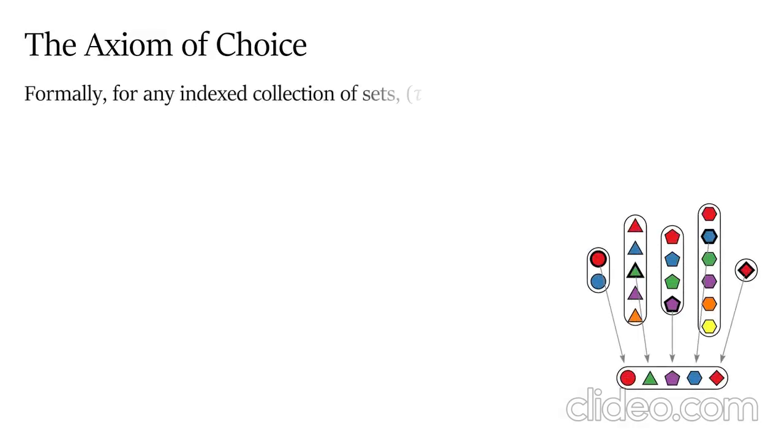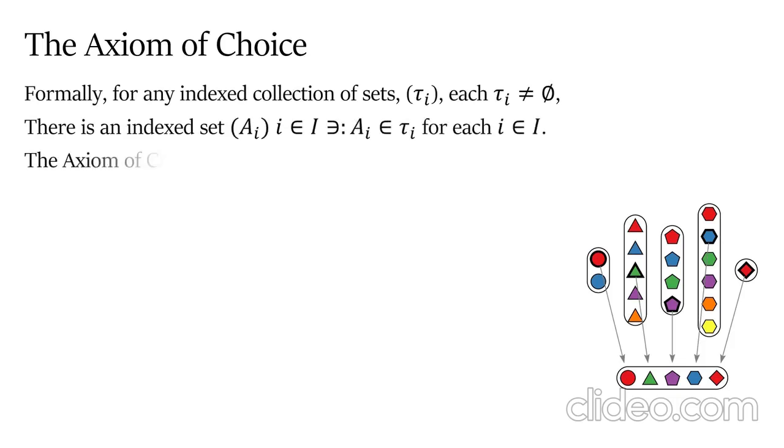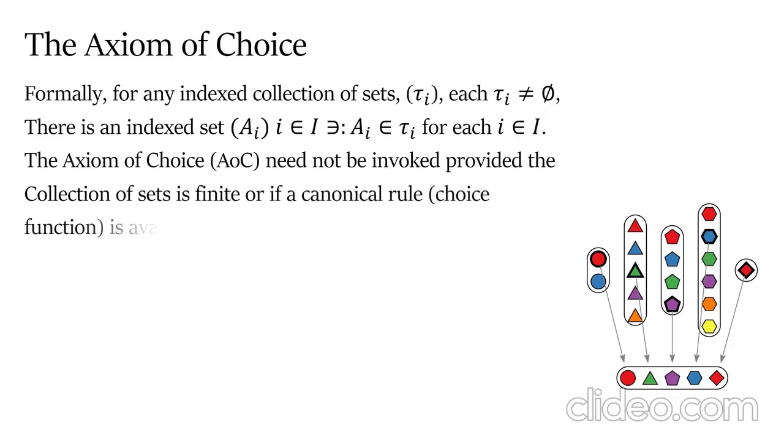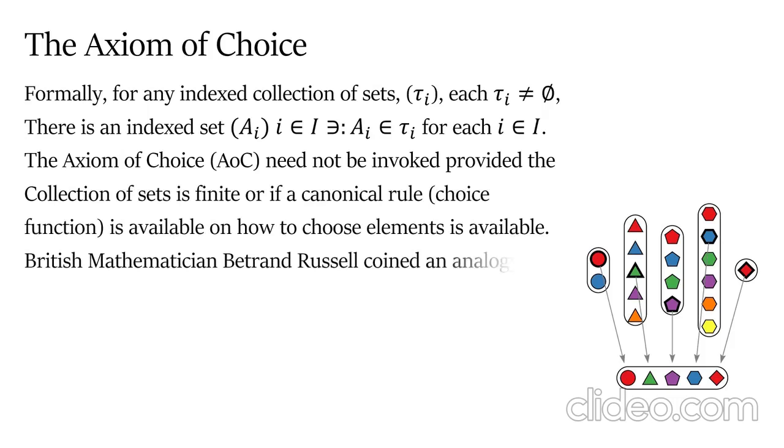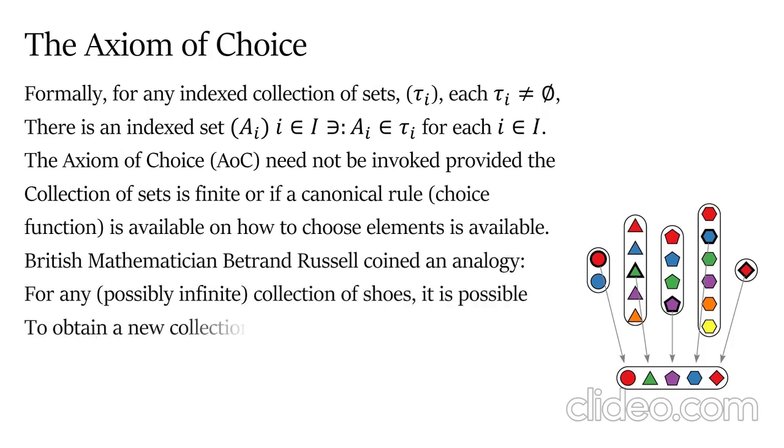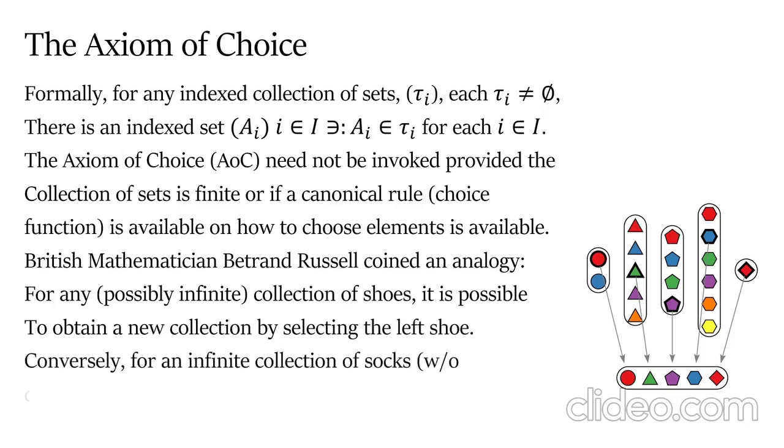Formally, for any indexed collection of sets τ_i, each not empty containing at least one element, there is an index at A_i such that A_i belongs to the collection for each index. The Axiom of Choice need not be invoked provided the collection of sets is finite or if a canonical rule or choice function is available on how to choose elements.